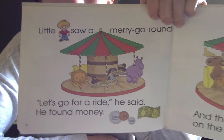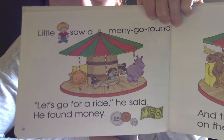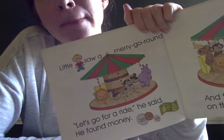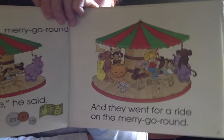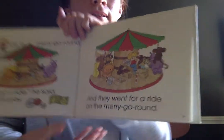Little M saw a merry-go-round. Let's go for a ride, he said. He found money. And they went for a ride on the merry-go-round.